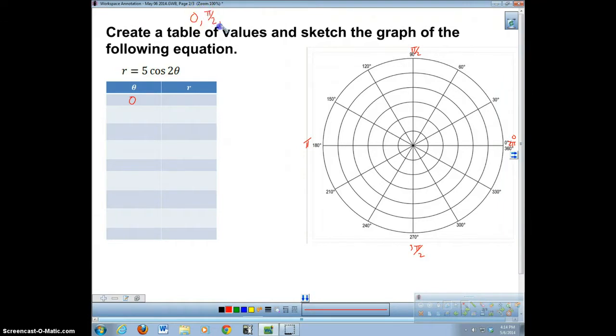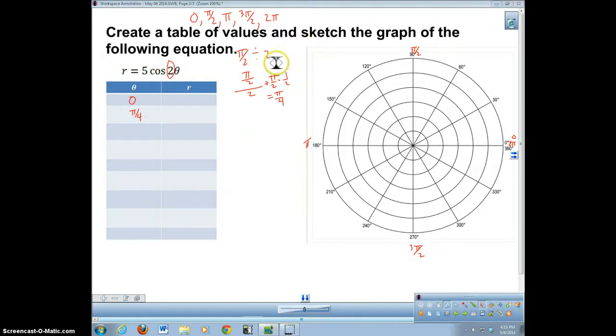So we're going to go 0, pi over 2, pi, 3 pi over 2, and 2 pi. Then we're going to take each of these numbers and divide it by n. So 0 divided by 2 is 0. Pi over 2 divided by 2 is pi over 4. Pi divided by 2 is pi over 2. 3 pi over 2 divided by 2 is 3 pi over 4. 2 pi divided by 2 is pi.